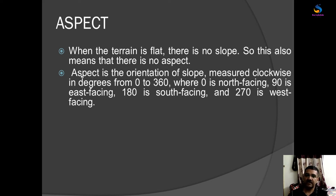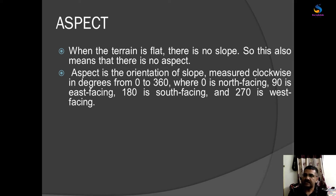Aspect is the orientation of slope measured clockwise in degrees from 0 to 360, where 0 is north facing, 90 degrees is east facing, 180 degrees is south facing, and 270 degrees is west facing. On our map, 0 degrees is north and 90 degrees is to the right. So if the slope direction value is around 90 degrees, we know the aspect is east facing.